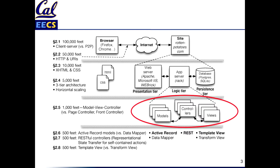In order to do that, we're going to go back to our diagram. We looked at the client-server nature of web apps and the fact that there are three tiers on the server side of a web app. Now we're going to dive into one of those tiers, the app server. We're going to see that Rails structures the app server according to a design pattern called Model View Controller.